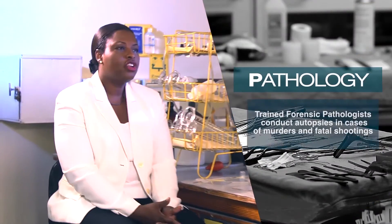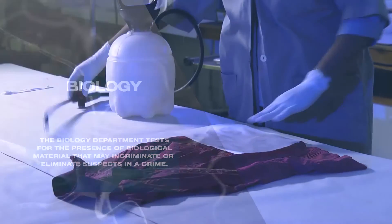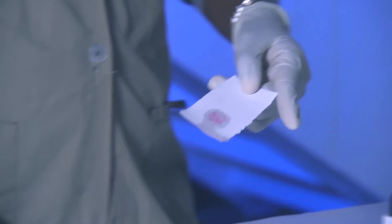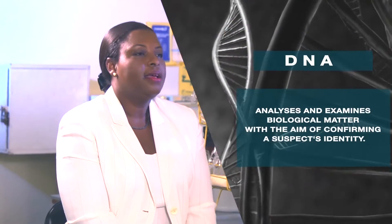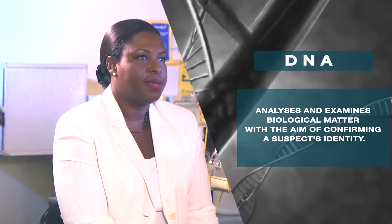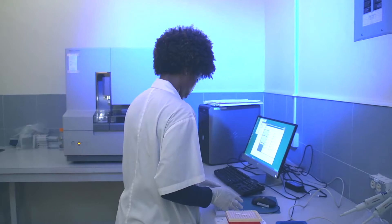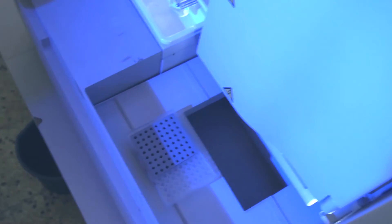The pathology department conducts autopsies to determine the cause, mechanism, and manner of death. Our biology department is concerned mainly with the detection and evaluation of biological stains. DNA conducts DNA analysis. So once a biological stain has been identified, it will be submitted to the DNA department where it will undergo DNA analysis.